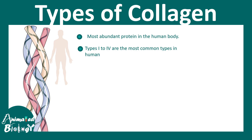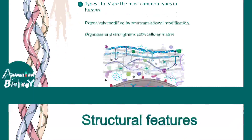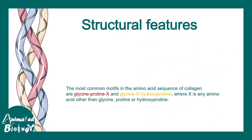Collagen is the most abundant protein in the human body, and type 1 and type 4 are the most common types in humans. It is extensively modified by post-translational modifications — this is one important point regarding collagen. It organizes and strengthens the extracellular matrix, making it the key protein found in the extracellular matrix.